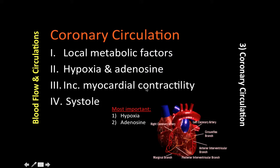For example, if we have an increase in myocardial contractility, which is accompanied by increased demand for O2, in order to meet that demand a compensatory vasodilation of the coronary vessels occurs. This vasodilation is the compensatory mechanism for the increased demand.